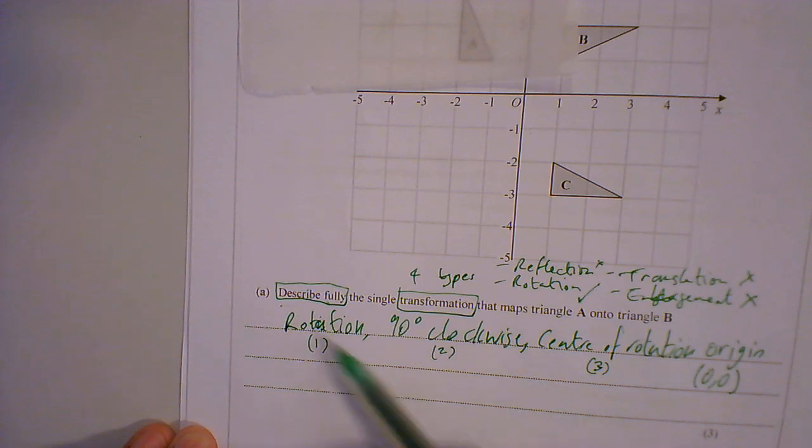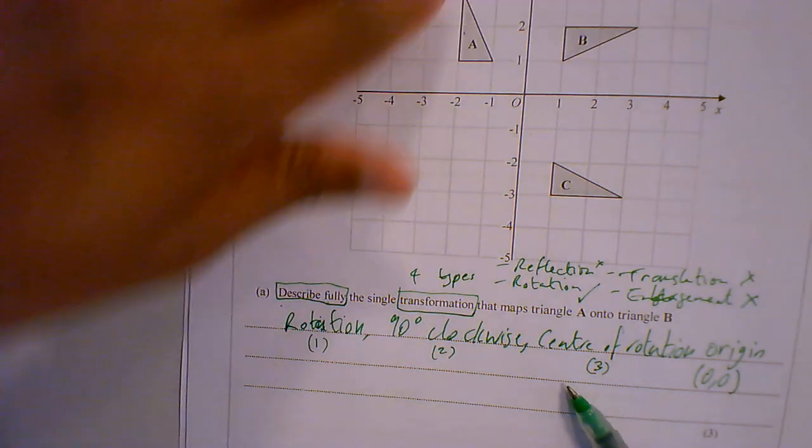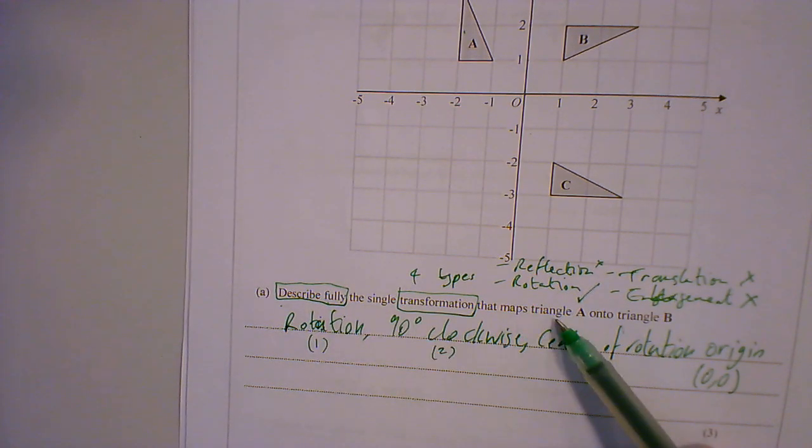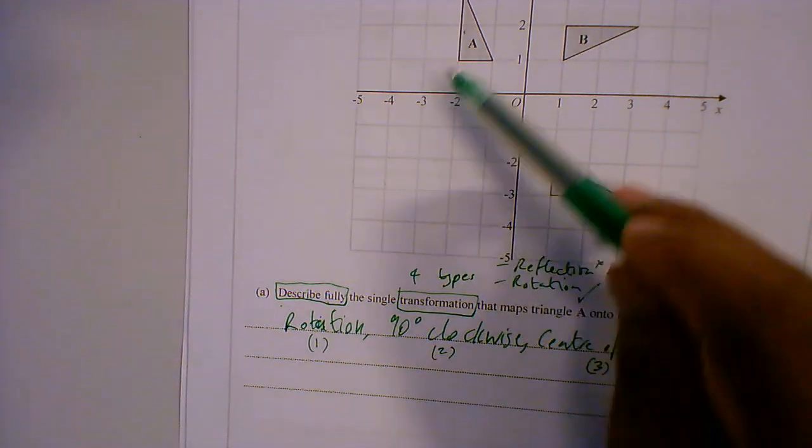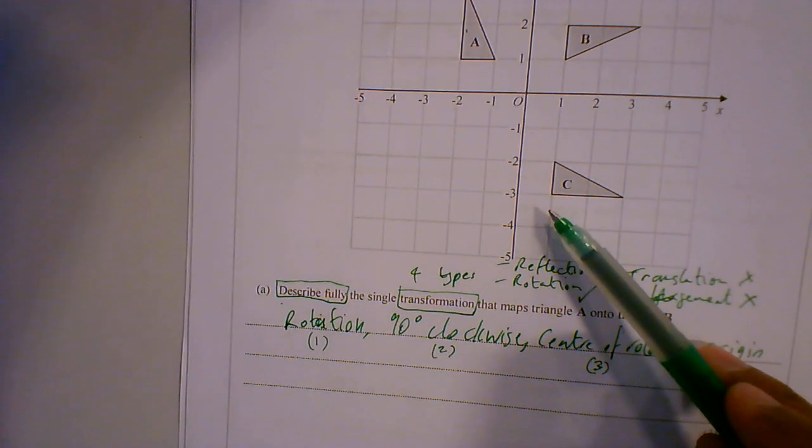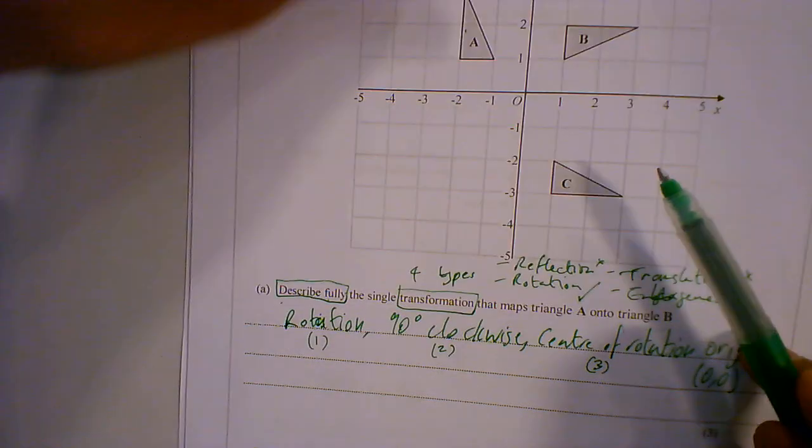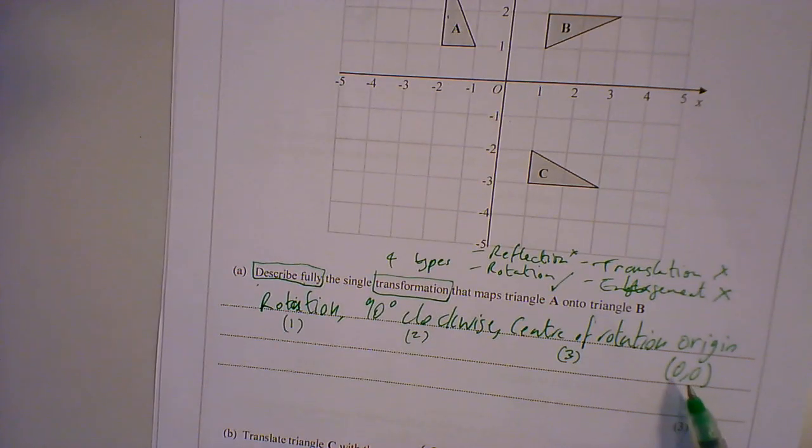So if you miss out a part, you will be missing out on the marks. So this is now my full answer. Describe fully the single transformation that maps triangle A onto B. So it's a rotation. I am going 90 degrees clockwise. And the center of rotation is the origin.